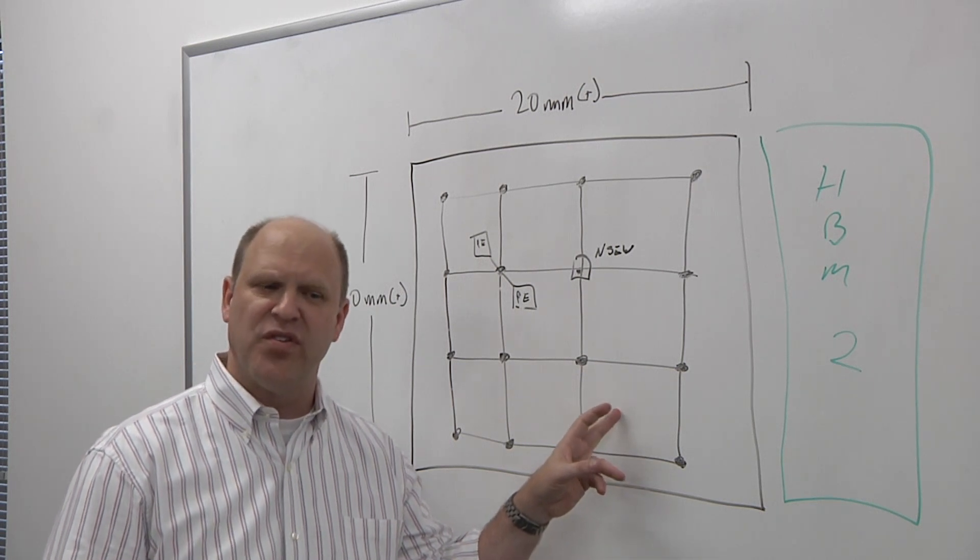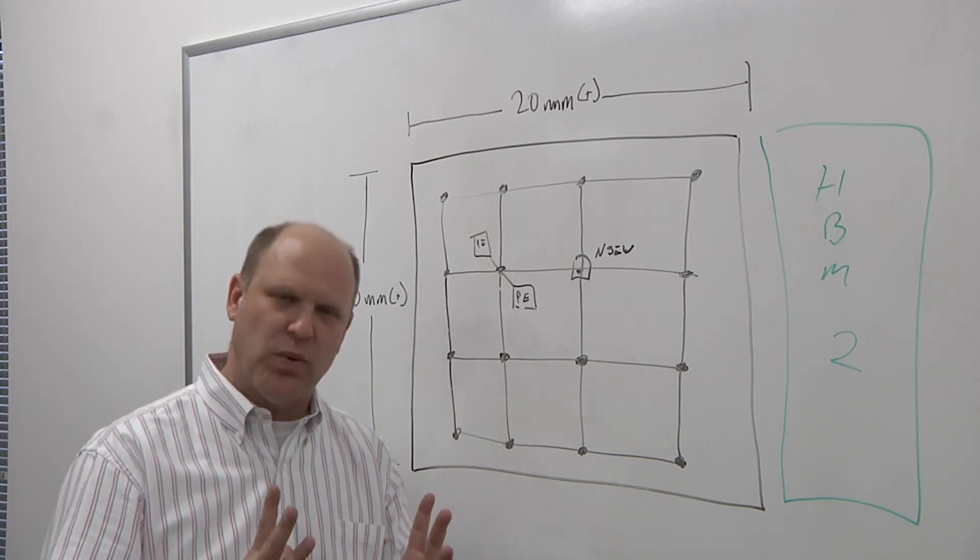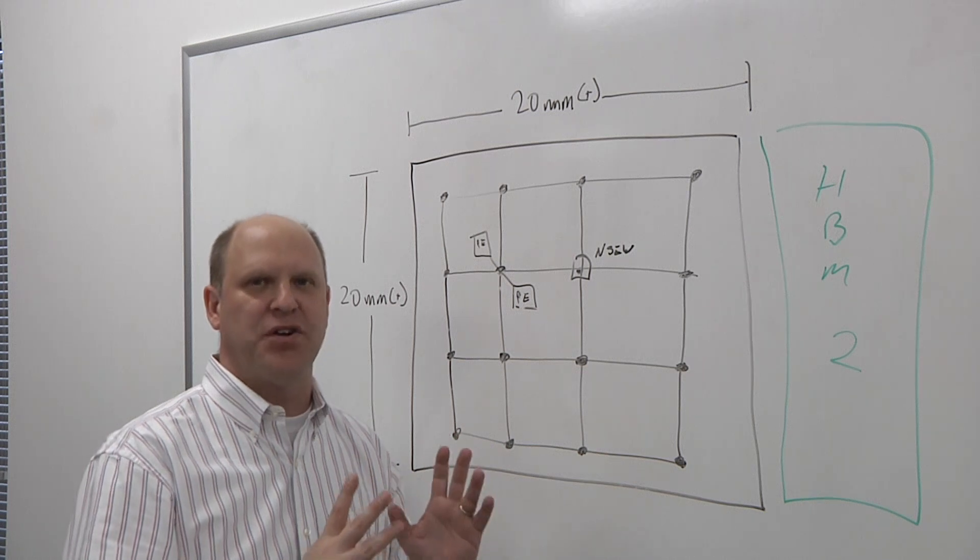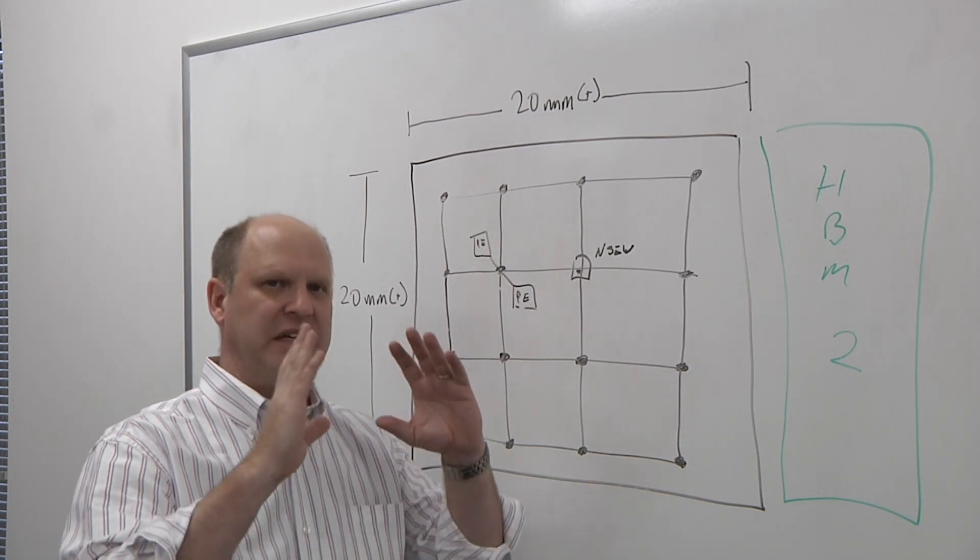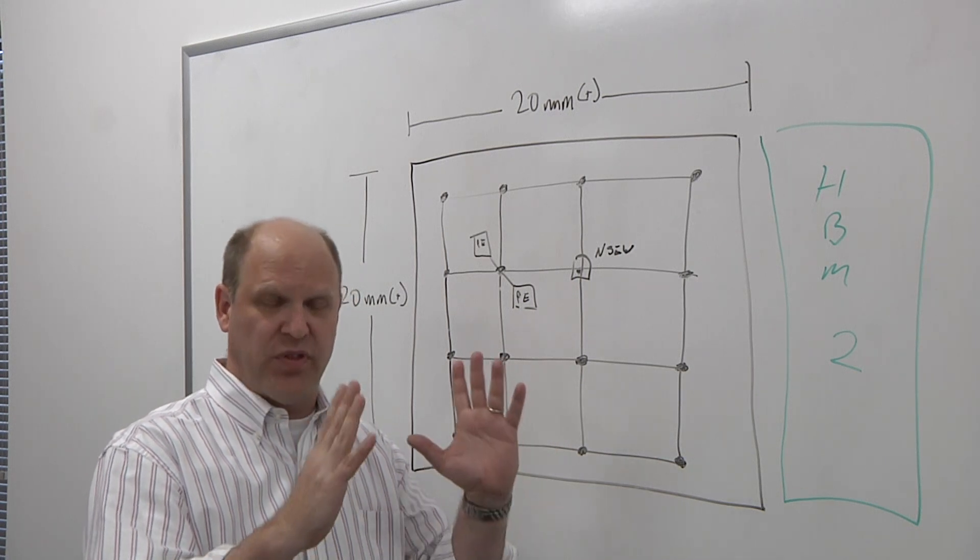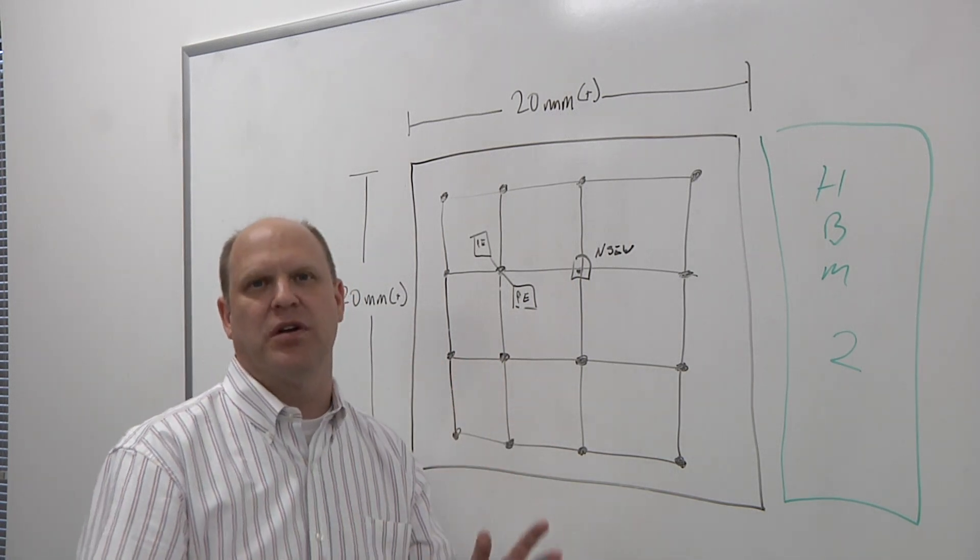For all of our customers who are doing this, these architectures are defined by the software requirements. This is totally a software algorithmically defined hardware architecture. So it's given the algorithms that we're going to use within this neural net training system, what does the hardware have to be to meet our requirements?